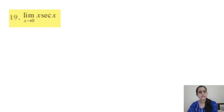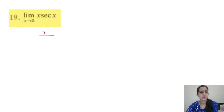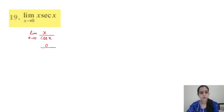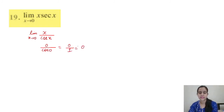Question 19: limit x tends to 0, x sec x. Rewrite sec x as 1/cos x: limit x→0 of x/cos x. Substituting x = 0: 0/cos 0 = 0/1 = 0. The answer is 0.